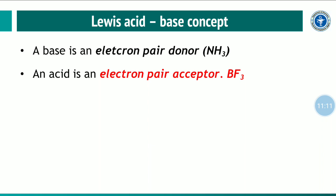The last theory is the Lewis acid-base concept. According to this theory, a Lewis base is an electron pair donor — for example, ammonia. A Lewis acid is any substance that has the ability to accept an electron pair — so it is called an electron pair acceptor, for example BF₃.